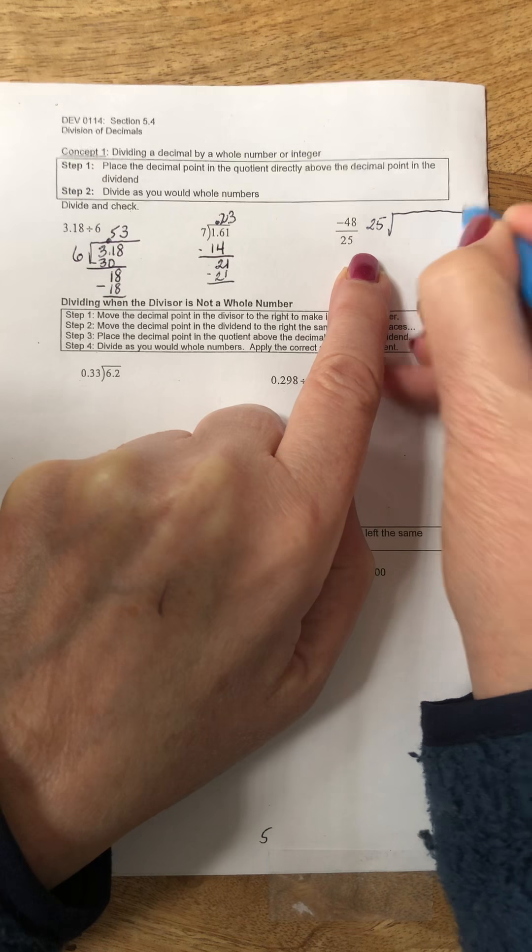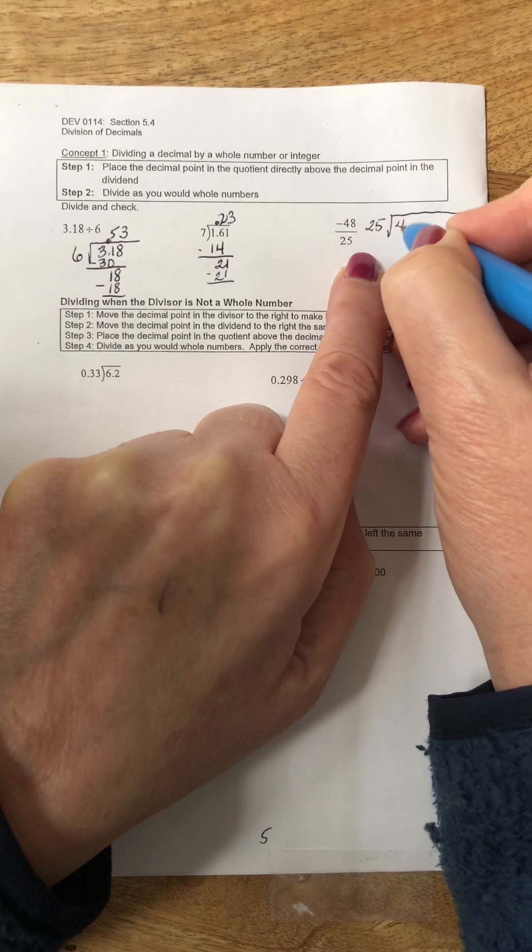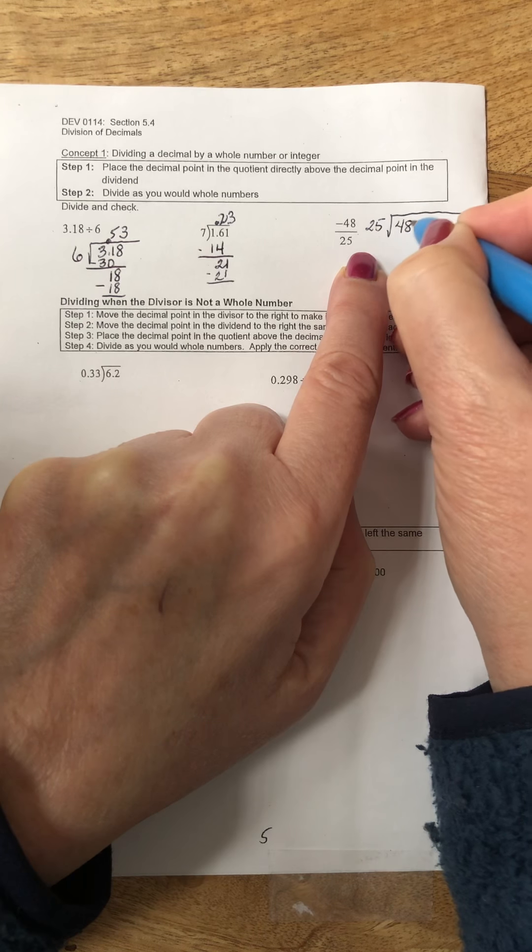Here I'm going to divide 25 into 48. I'll worry about the negative when I'm finished. Notice I can put a decimal point and zeros afterwards. 25 goes into 48 once and when I subtract I have 23.